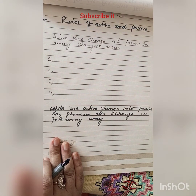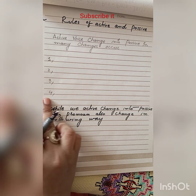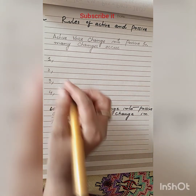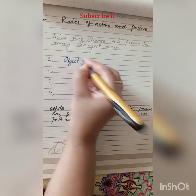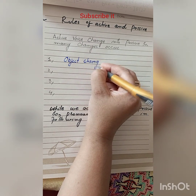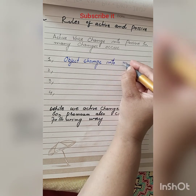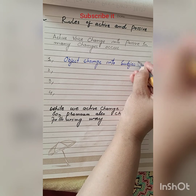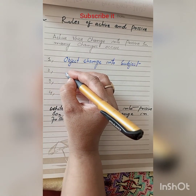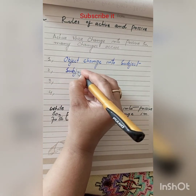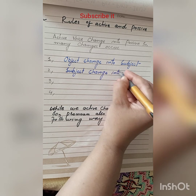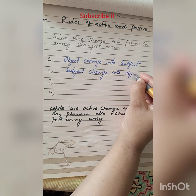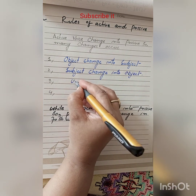Now let's start the rules of active and passive voice. That is very important — active voice changed into passive voice. There are four changes. Number one: object changes into subject. Number two: subject changes into object. Number three: always use the third form of the verb.